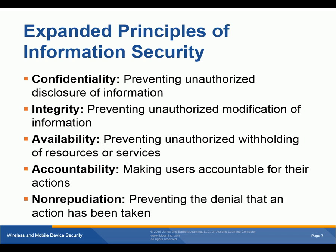Here's one part we cover in every class. I actually put it on the computer security cryptography test and multiple people got it wrong. Confidentiality means preventing unauthorized disclosure of information — you shouldn't just put student records out for people to see. Integrity means preventing unauthorized modification. And availability. Those are the three biggies — CIA. And it does not stand for the Central Intelligence Agency.